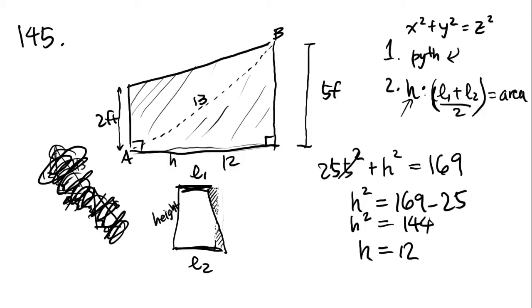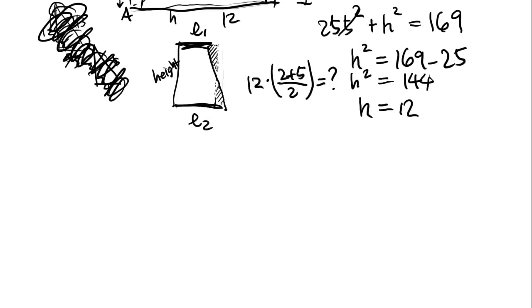So, we know h is 12. Let's plug it into this equation. We have 12 times length 1 is 2 feet. Length 2 is 5 feet. So, 2 plus 5 over 2 equals what? It's going to be 12 times 7 over 2 equals something. We can cross multiply or cancel out and get a 6. 6 times 7 is 42. 42 is answer choice C.